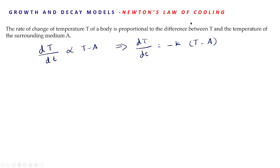We have dT/dt equal to −k(T − A). Here it is Newton's law of cooling. If a hot body is placed in a medium whose temperature is less, then the temperature of the body will decrease. As a result, we have a negative k. Using this differential equation, we can find the general solution and proceed with solving questions.